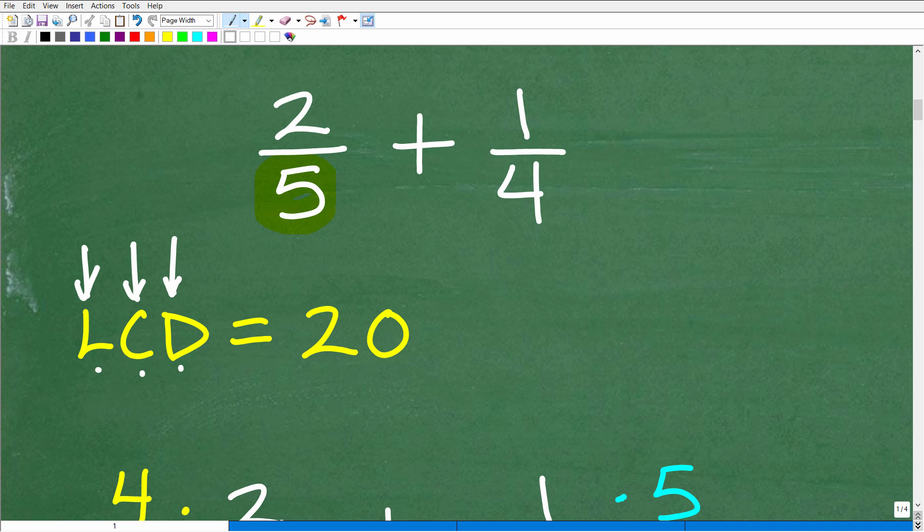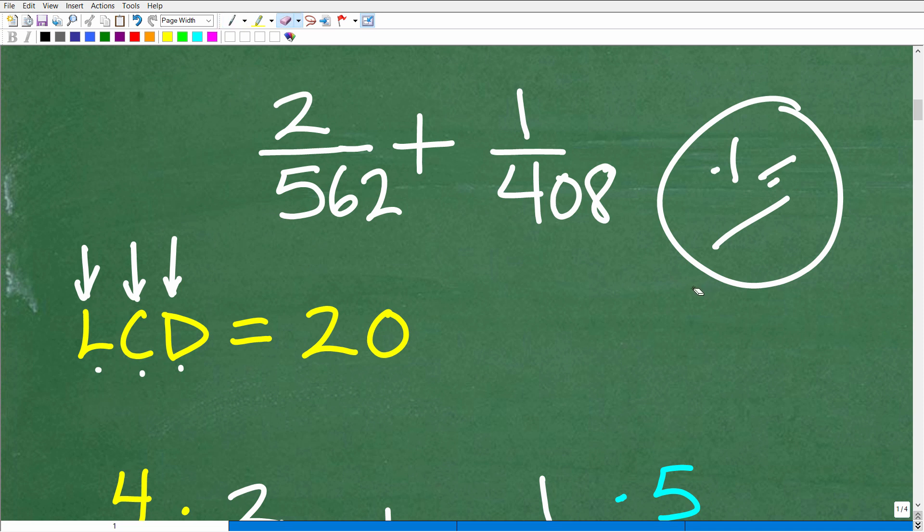Instead of 2/5 plus 1/4, let's make these denominators a little bit interesting. What if I had like 562 and 408? What if I was trying to add these two fractions? A lot of you would just be like really angry at me and be like, yeah, that's not fair. I'll just use my calculator. Matter of fact, I'm just going to leave your YouTube video right now.